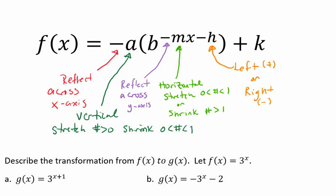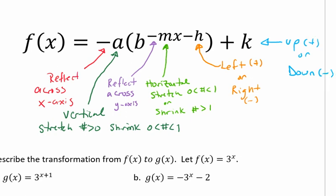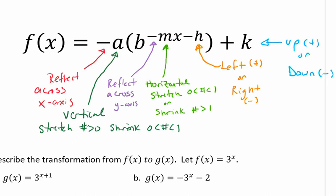So our h will move our function left or right. If we see a plus sign, it will move it to the left, and if we see a minus sign, it will move it to the right. And our k value will still move it up or down. Up for a plus sign and down for a minus sign. So even though the equations look changed, the way that things get transformed stays the same.